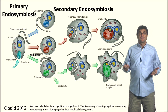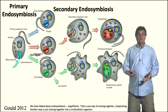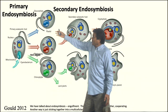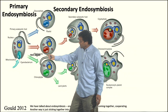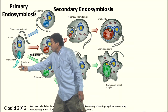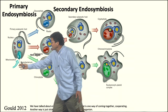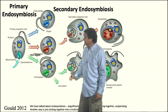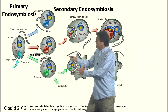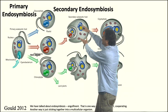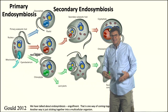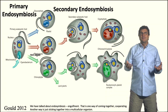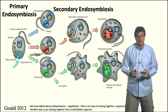We have talked about endosymbiosis, and about the examples of primary endosymbiosis — when a free-living bacteria gets engulfed and becomes a mitochondria, and another thing gets engulfed and becomes a plastid, and that whole cell gets engulfed by another whole cell. That's not really multicellularity; it's a way for life to be nested inside of itself.